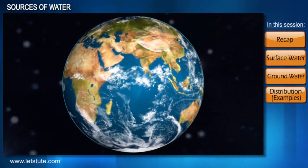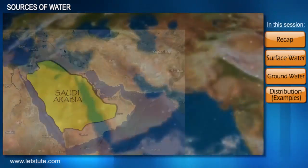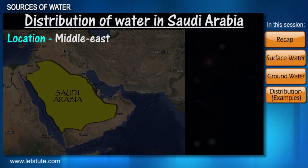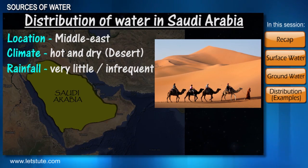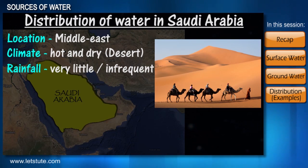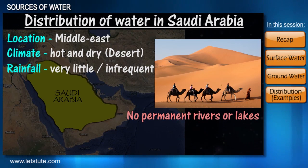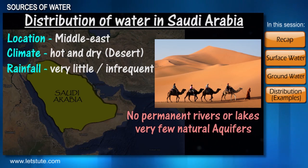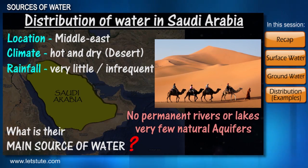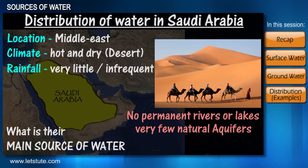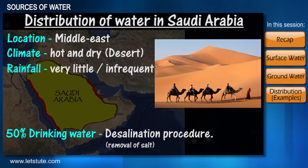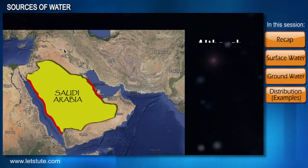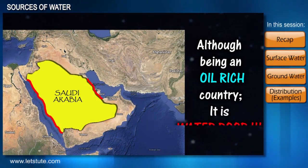These factors vary from place to place. For example, if we consider Saudi Arabia, a country located in the Middle East — owing to its hot and dry climate, it receives very little or infrequent rainfall. Therefore it has no permanent rivers or lakes and very few natural aquifers. What then is their main source of water? Because of its proximity to the sea, 50% of the drinking water is obtained by desalination procedures. Although it is an oil-rich country, it is water-poor.